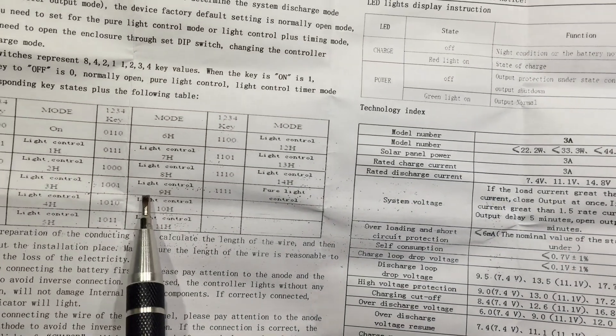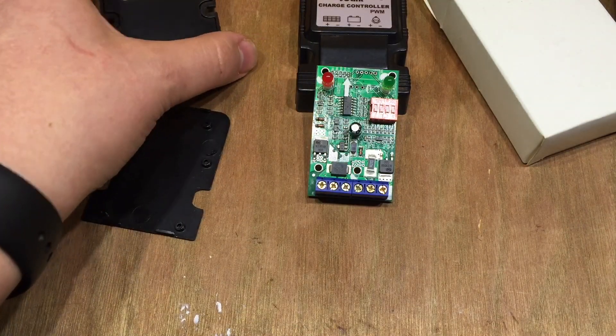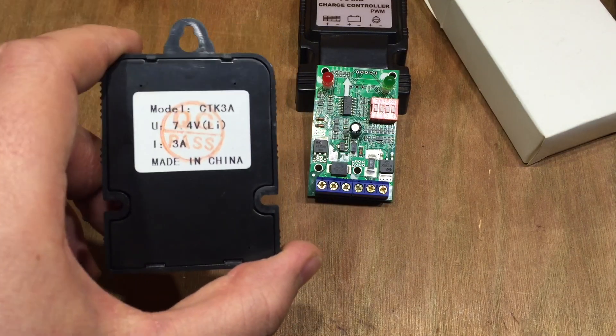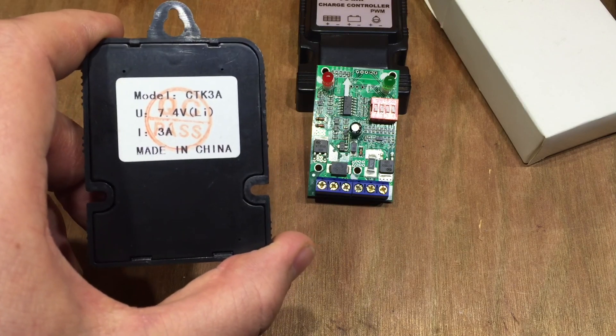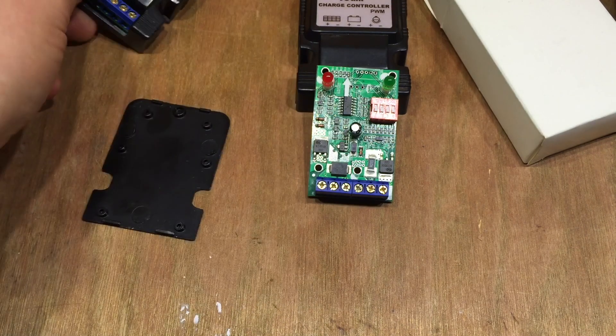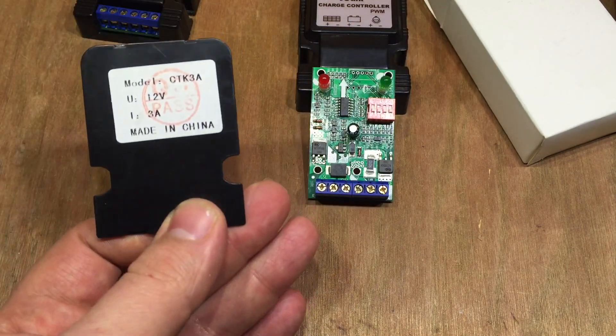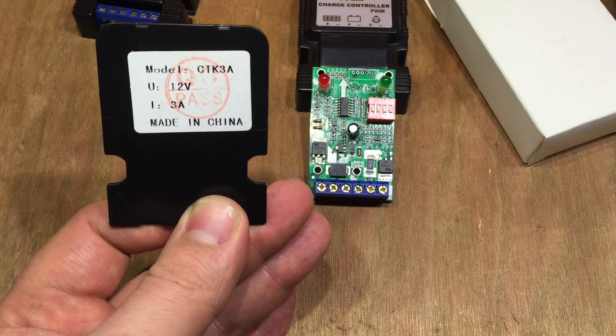But for now, we know what the dip switches do, and if you're buying one of these on eBay, make sure you get the right model - 7.4V for lithium-ion or 12V for lead-acid.